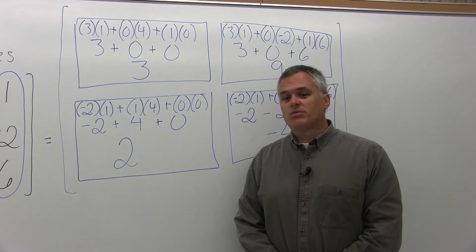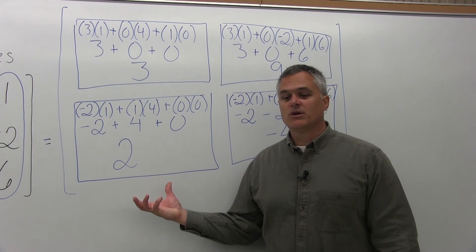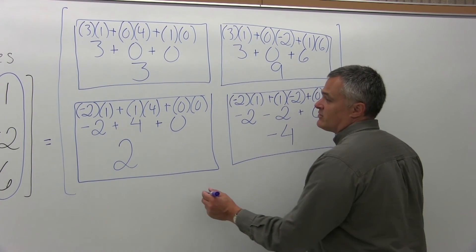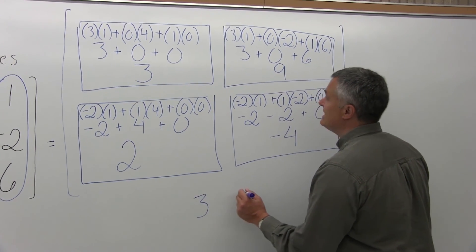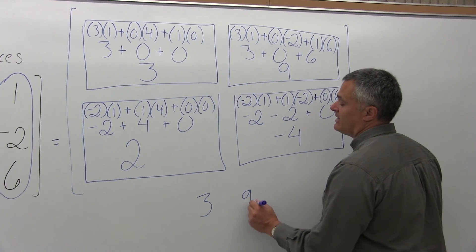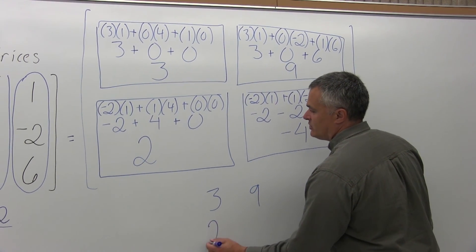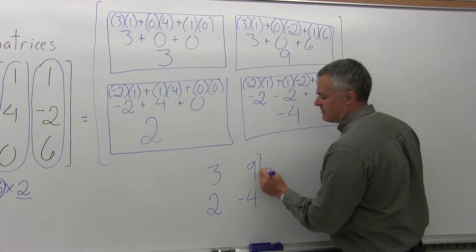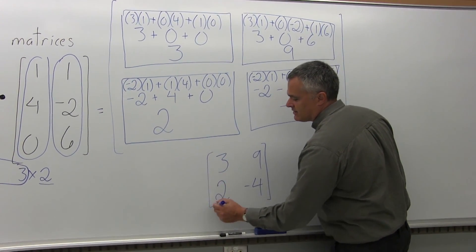All the work is done, but it's not really the proper way to leave it with all this work showing. So the final matrix has 3, 9 in the top row, and 2, negative 4 in the second row. And that's the answer.